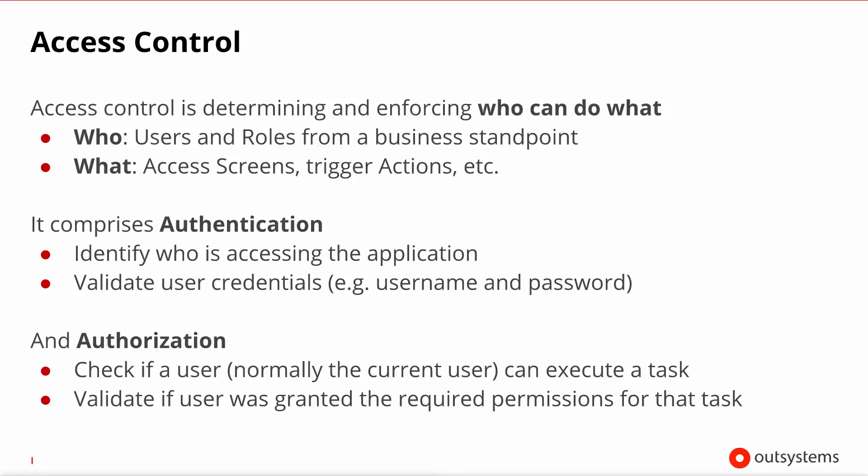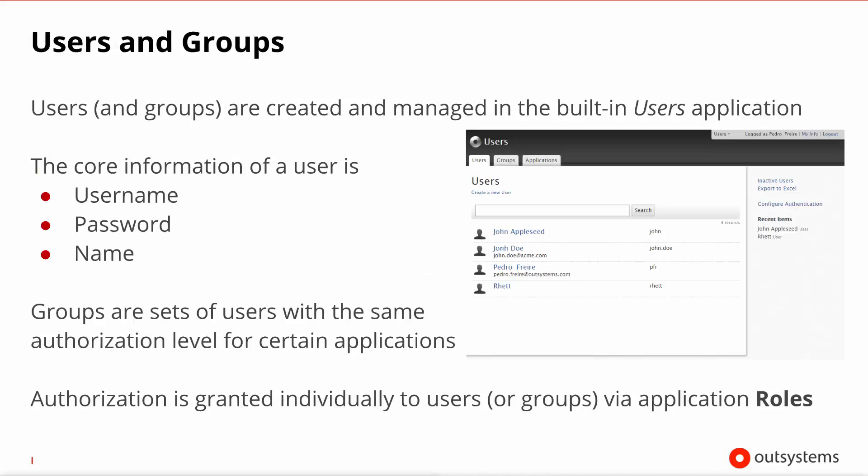Authentication is the process of identifying who is trying to access your application, and you do so by validating the credentials of the user. Once a user is authenticated, you can then grant him access and authorize him to do certain things. The standard way to provision users in the OutSystems platform is through the built-in users application. At its most simple, you create a user and specify their username, password, and name.